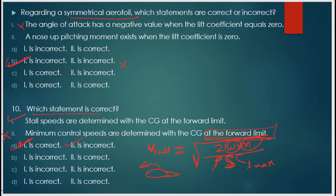So the factors for minimum control speed and stall speeds — if you understand these points, you can easily get the right option. Because minimum control speed decreases as the center of gravity moves forward, you cannot determine minimum control speed at the forward limit. That's why the second statement is wrong. That's all for these 10 questions — I'll show you more questions in the next videos. Bye-bye.